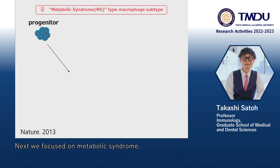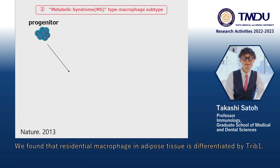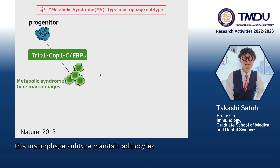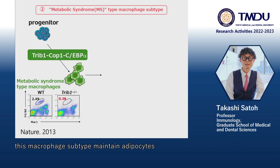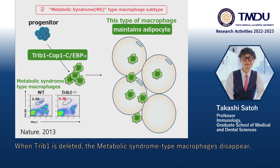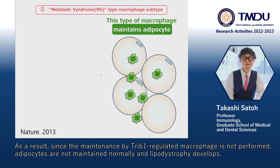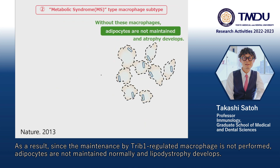Next, we focused on metabolic syndrome. We found that residential macrophages in adipose tissue are differentiated by TRIB1, and this macrophage subtype maintains adipocytes. When TRIB1 is deleted, this type of macrophage disappears. As a result, since the maintenance by TRIB1-regulated macrophages is not performed, adipocytes are not maintained normally and lipodystrophy develops.